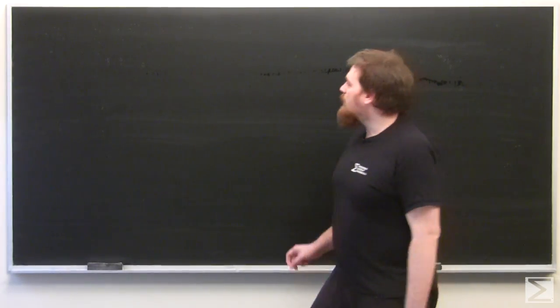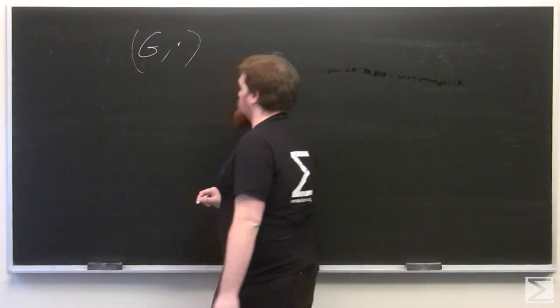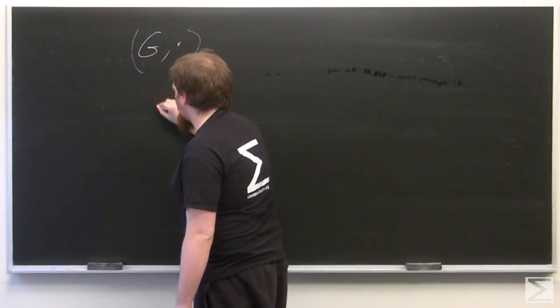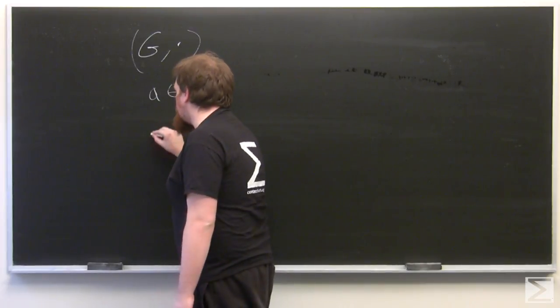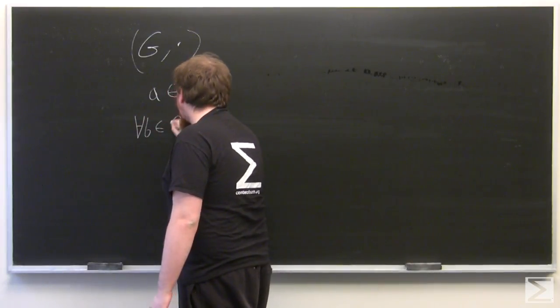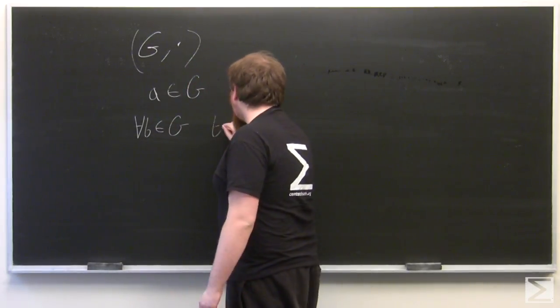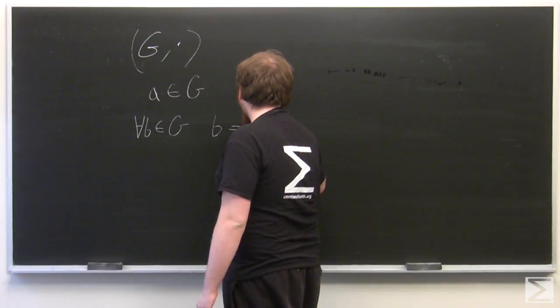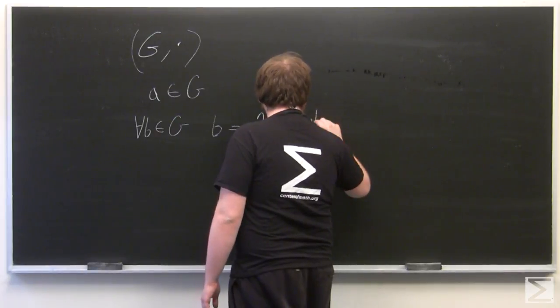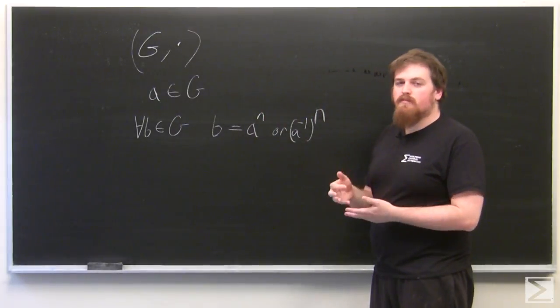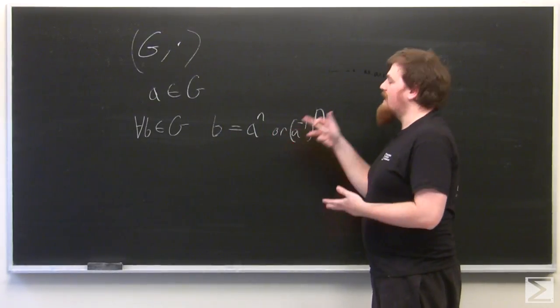Cyclic groups are groups G with multiplication operation in which there's some privileged element A such that every B, this is the for all symbol, every B in G can be reached by repeatedly multiplying A or the inverse of A with itself some finite number n of times.